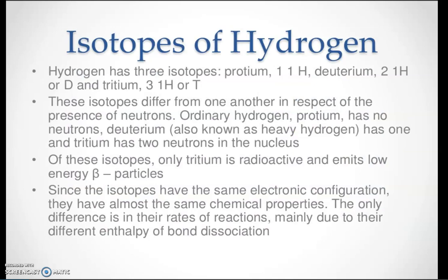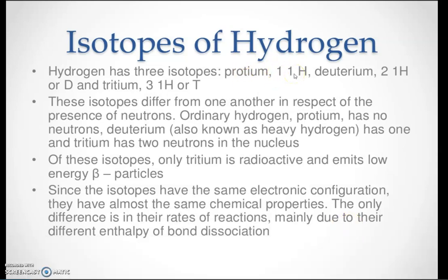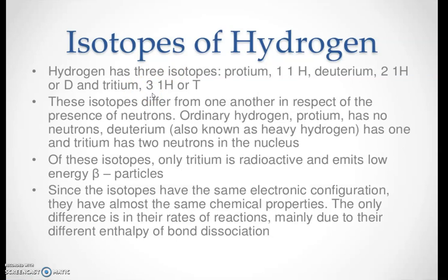Now we will see the isotopes of hydrogen. Isotopes are substances which have the same atomic number but different mass numbers. Hydrogen has three isotopes: protium, deuterium, and tritium. Protium has mass number one and atomic number one. Deuterium has mass number two and atomic number one. Tritium has mass number three and atomic number one. These three differ only in their number of neutrons.